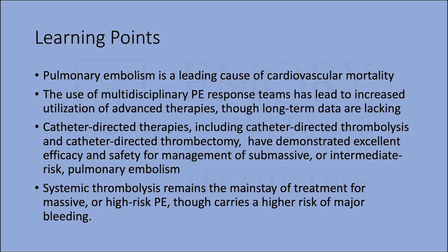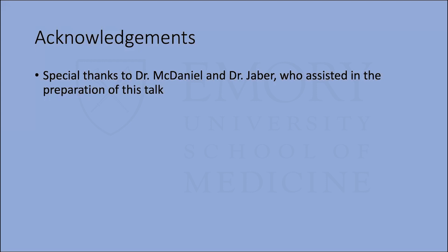To summarize: PE is a leading cause of cardiovascular mortality. Pulmonary embolism response teams have led to increased utilization of advanced therapies, though long-term data are still lacking. Catheter-directed therapies — both catheter-directed thrombolysis and catheter-directed thrombectomy — have shown excellent efficacy and safety for submassive or intermediate-risk PE. Systemic thrombolysis, while carrying a higher rate of major bleeding, remains the main treatment for massive or high-risk PE. Thanks to Dr. McDaniel and Dr. Jabber for assistance with preparation. I'd love to open up for questions.